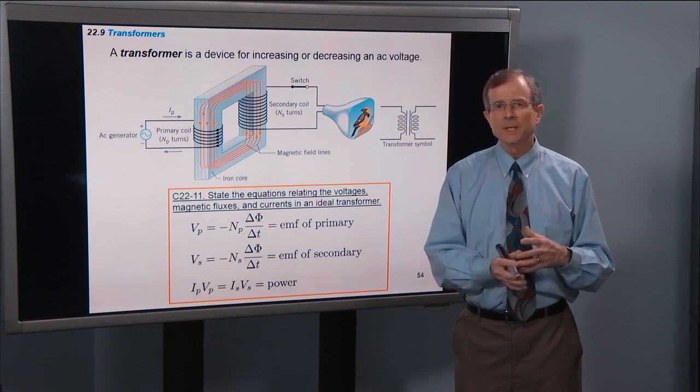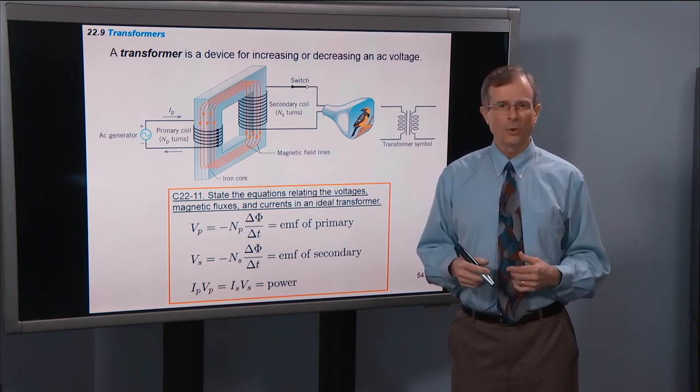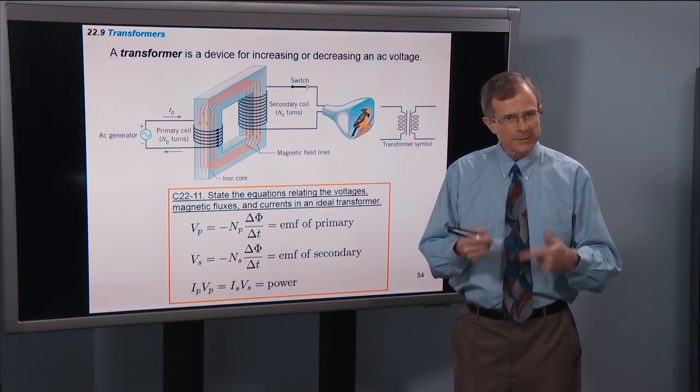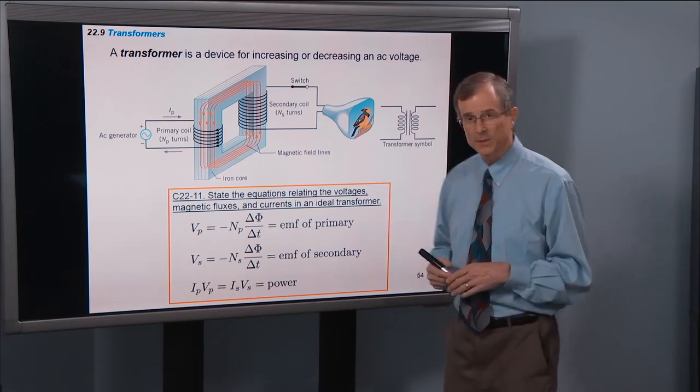It creates a change in the magnetic flux through the secondary coil. And then because of Faraday's Law, there's an emf and a current generated in the secondary coil. That's the way a transformer works.